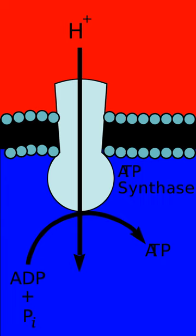If protons flow back through the membrane, they enable mechanical work, such as rotating bacterial flagella. ATP synthase, an enzyme highly conserved among all domains of life, converts this mechanical work into chemical energy by producing ATP, which powers most cellular reactions. A small amount of ATP is available from substrate-level phosphorylation, for example in glycolysis. In most organisms the majority of ATP is generated in electron transport chains, while only some obtain ATP by fermentation.